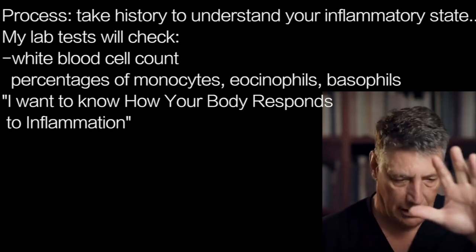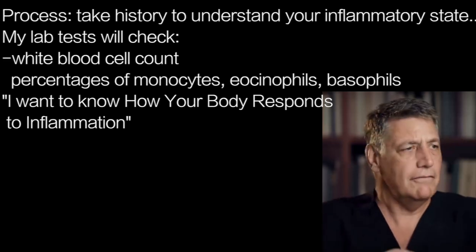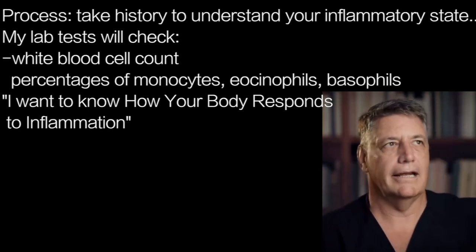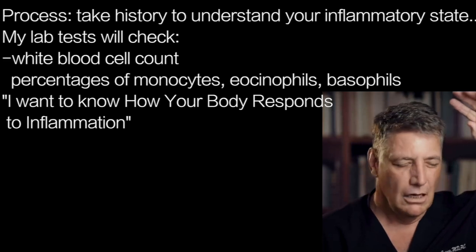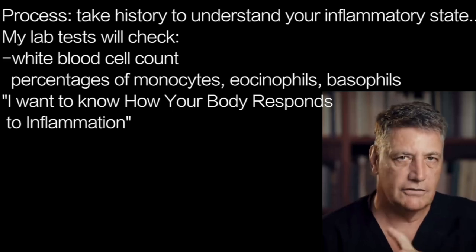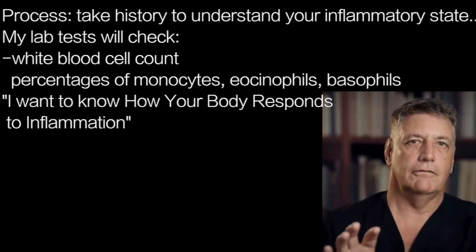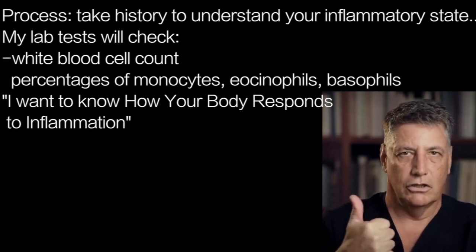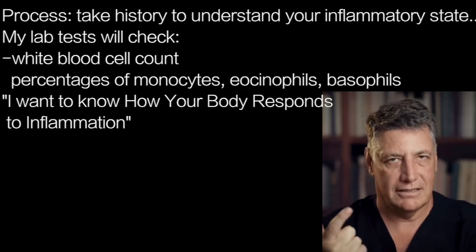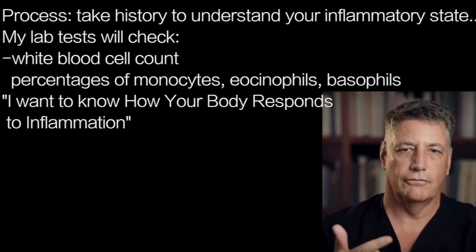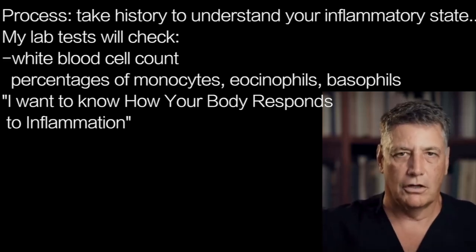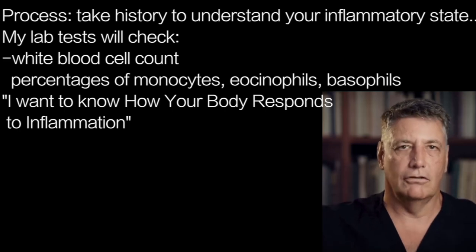In your blood work, I'm going to do a detailed blood work analysis. We're going to look at your white cell count and the percentages that make up that white cell count — monocytes, eosinophils, basophils. We're going to look at the fractional percentage to determine your vascular inflammation and how your body responds on a cellular immune level and a humoral immune level. We don't need to measure all of the immunoglobulins and all the complements. I want to know how your body responds to inflammation.